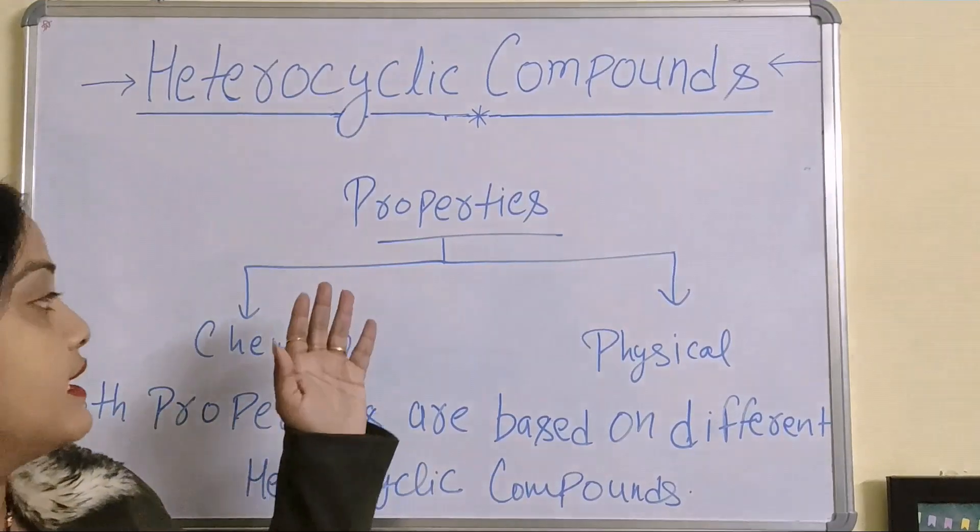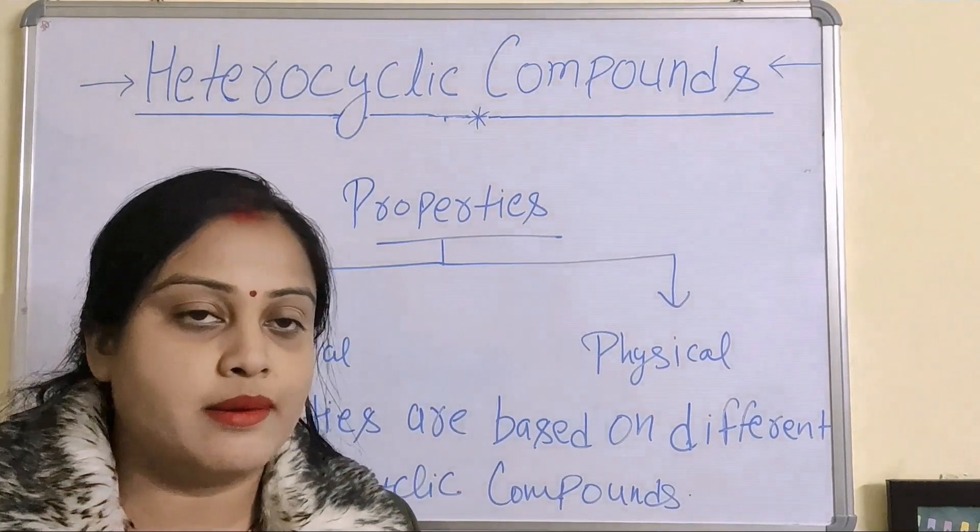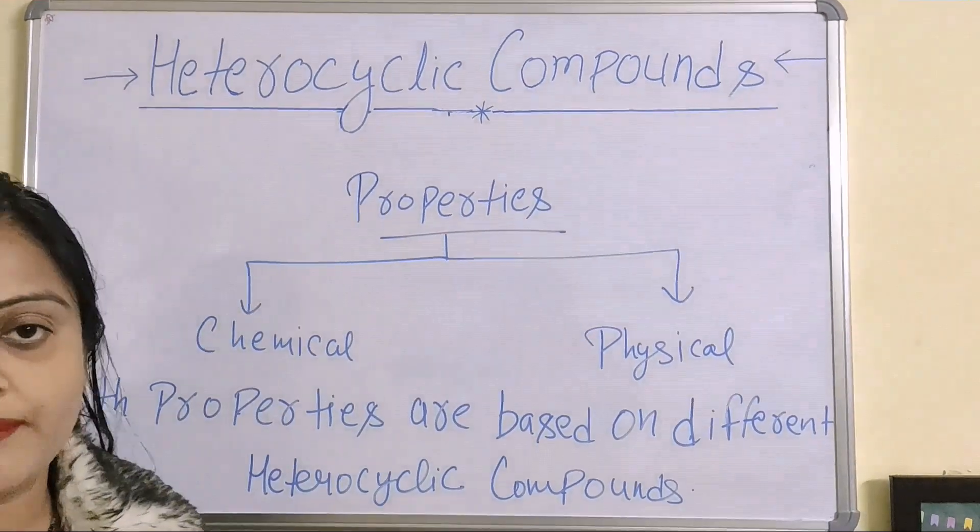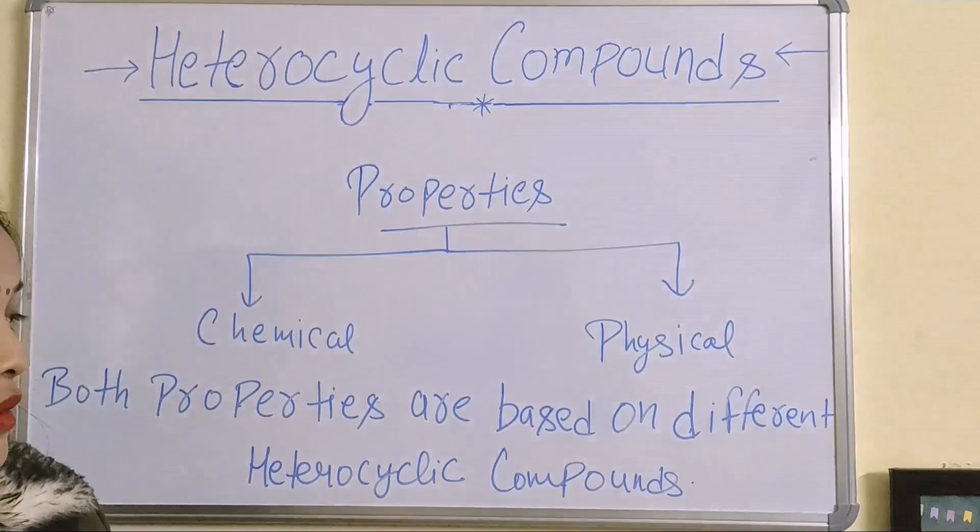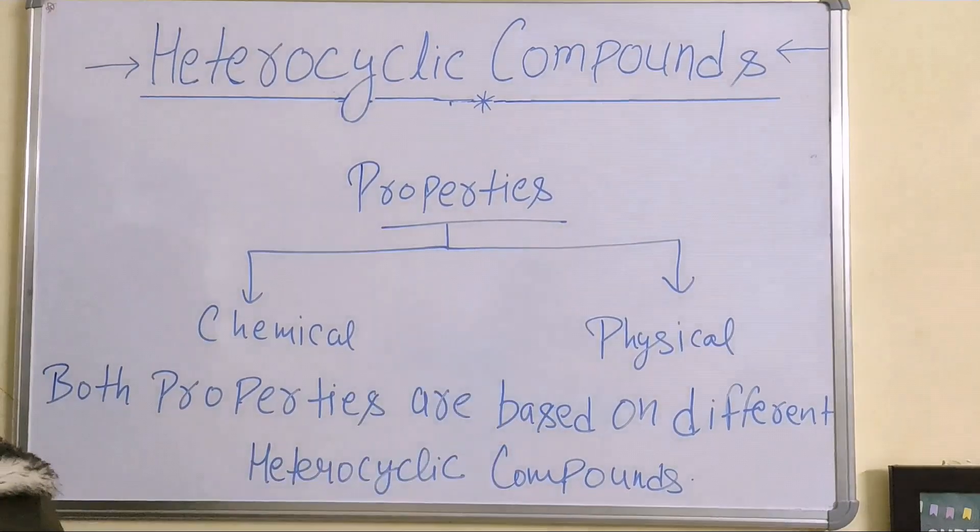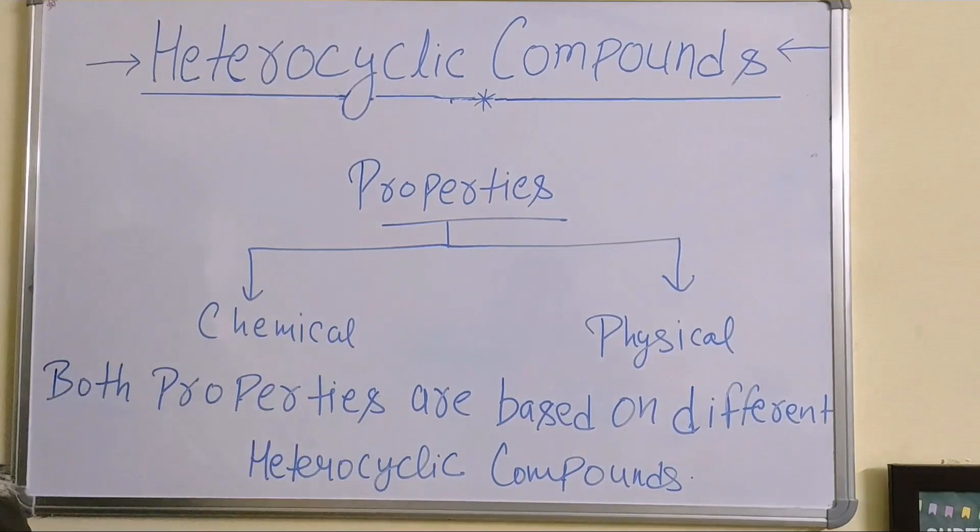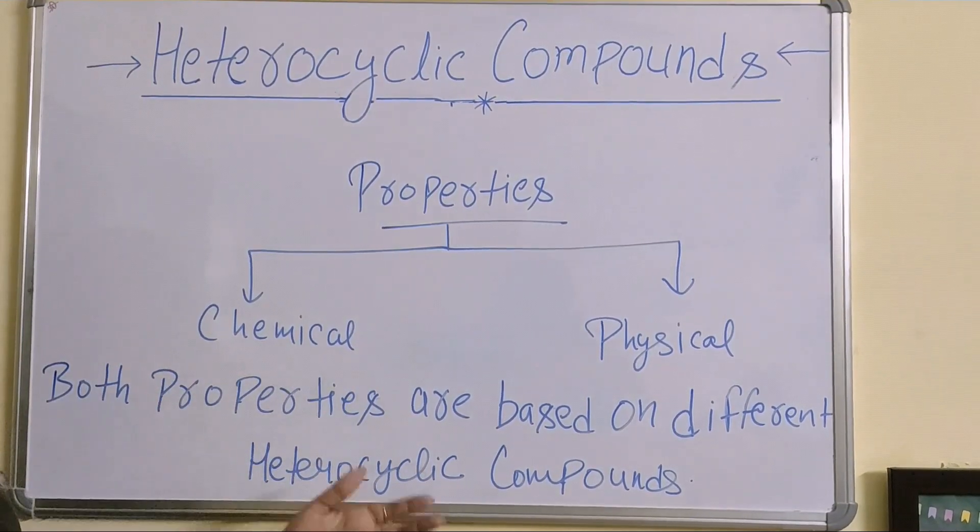Now we are talking about properties of heterocyclic compounds. Here we are talking about two properties, physical and chemical properties of heterocyclic compounds. If we are talking about two properties, then it is different and different.